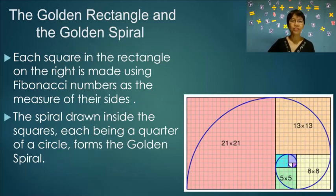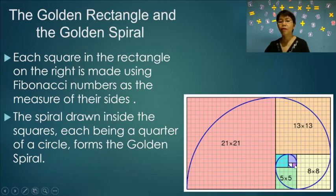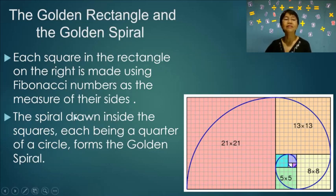The golden rectangle and the golden spiral. Each square in the rectangle is made using a Fibonacci number as its side length. Starting with two 1-by-1 squares, the next square is 2-by-2, then 3-by-3, followed by 5-by-5, 8-by-8, and so on. A spiral drawn inside each square as a quarter circle forms the golden spiral.